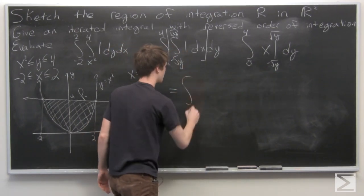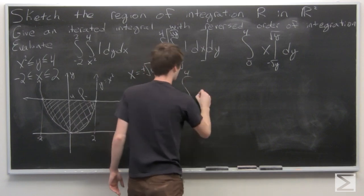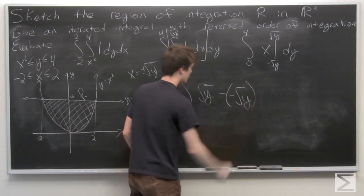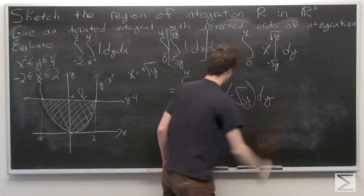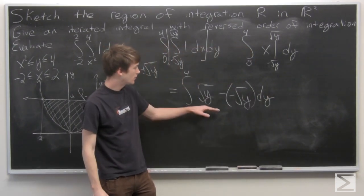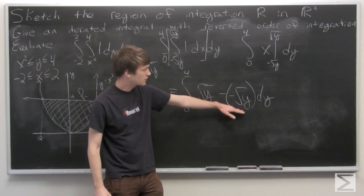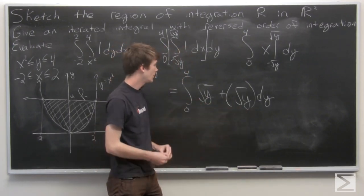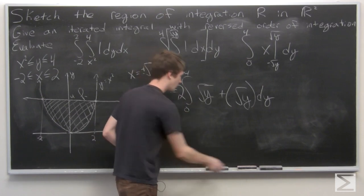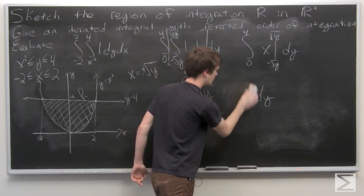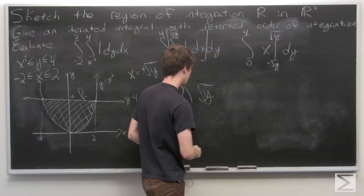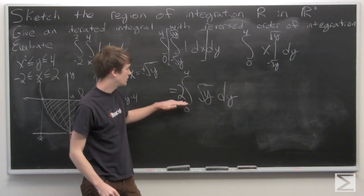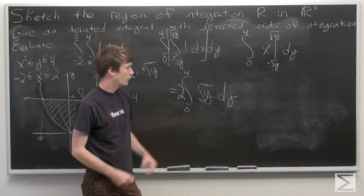We evaluate to get the integral from 0 to 4 of square root of y minus negative square root of y, which is just plus square root of y. So square root of y plus square root of y is 2 square root of y. Our integral simplifies to 2 times the integral from 0 to 4 of square root of y dy.